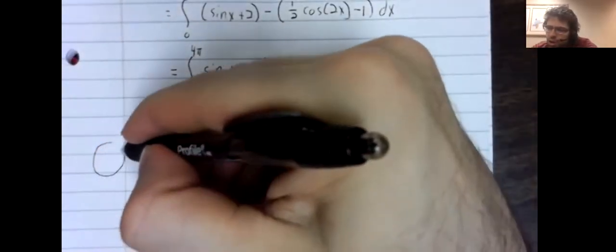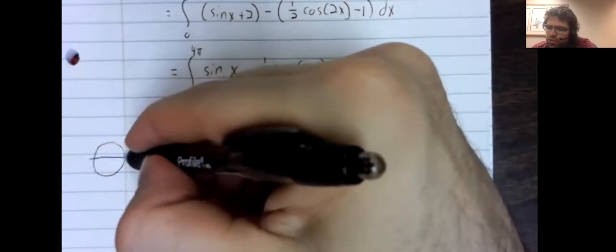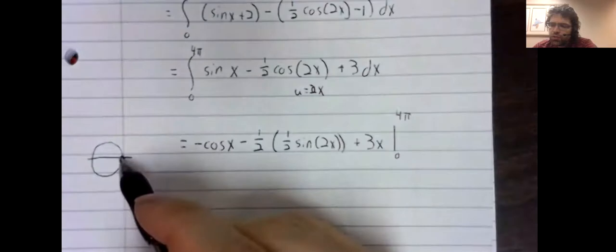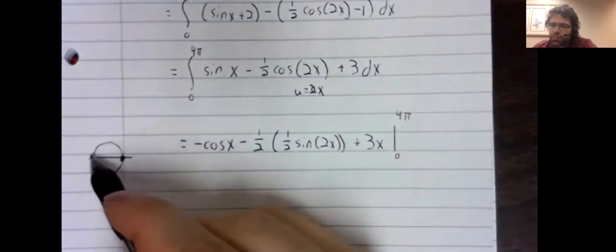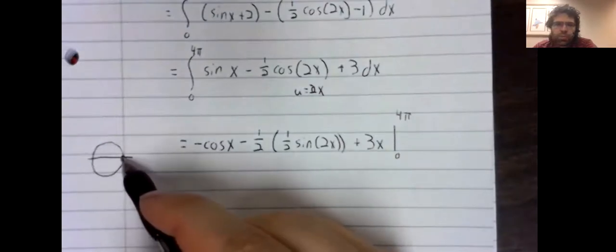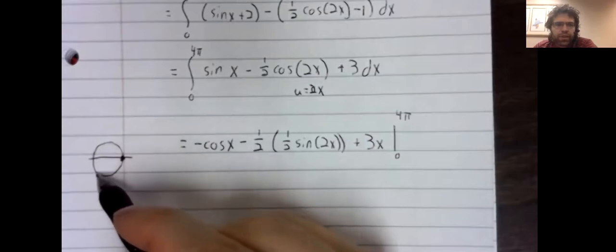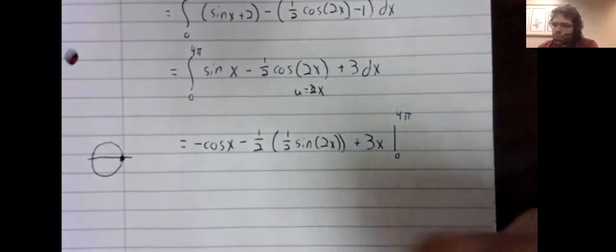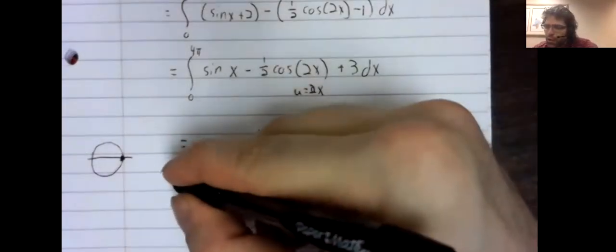Evaluated from zero to four pi. So, on a unit circle, here's a zero. Here's two pi. Here's four pi. So, the cosine of four pi is one.